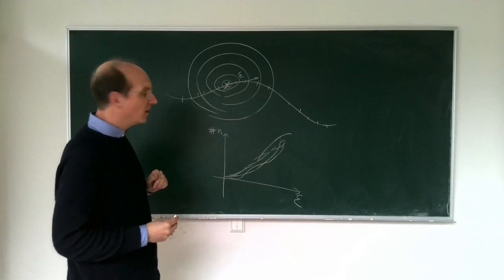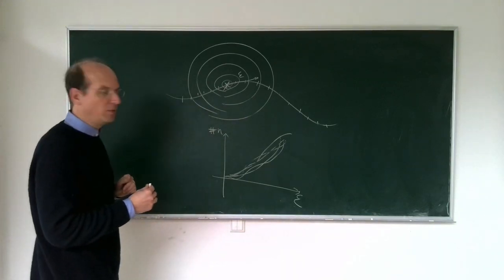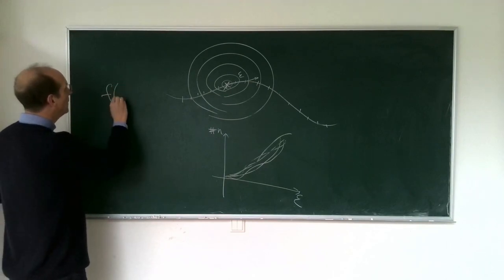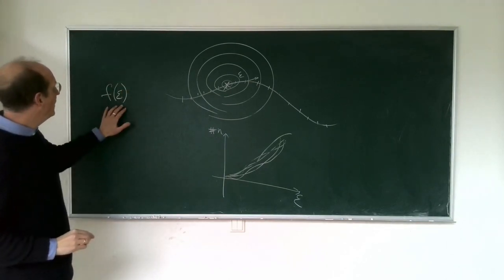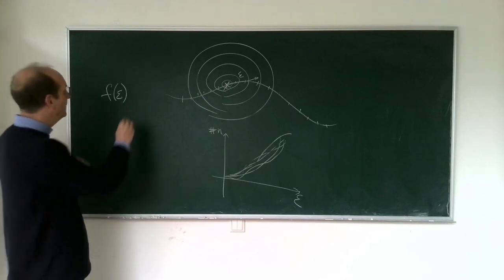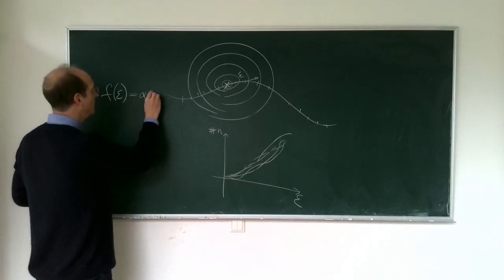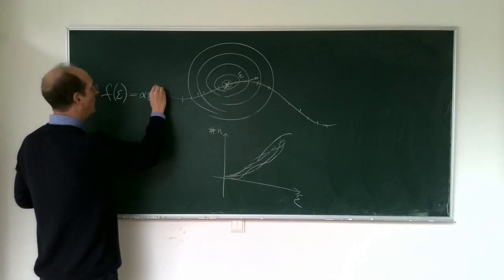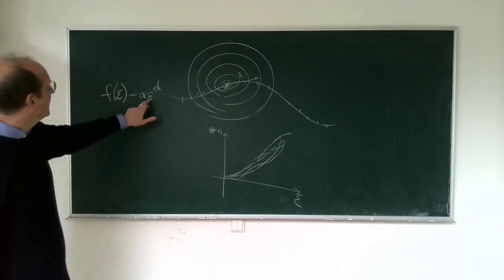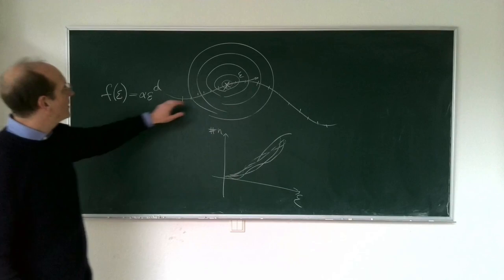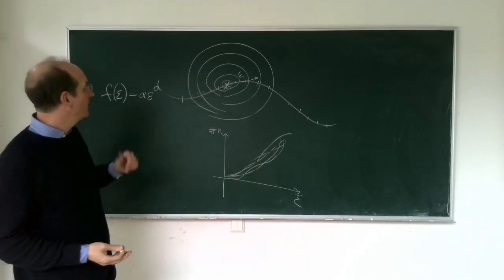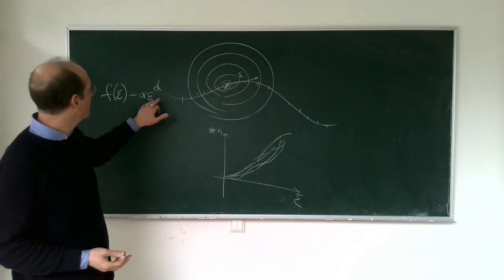Suppose the number of points inside the ball of size epsilon is something like α times epsilon to the power of d. By increasing the size of epsilon, with what proportionality does the number of points grow? In a one-dimensional world, if you increase the ball, the number of points will grow linearly.